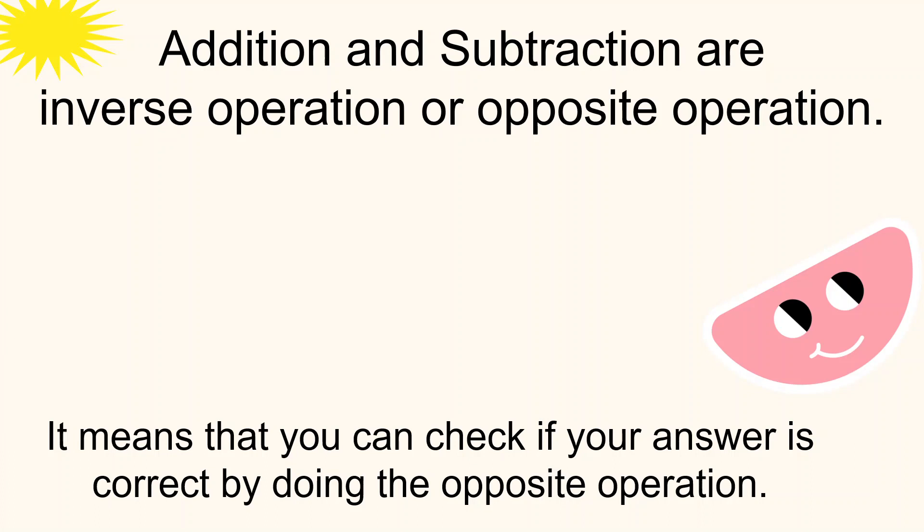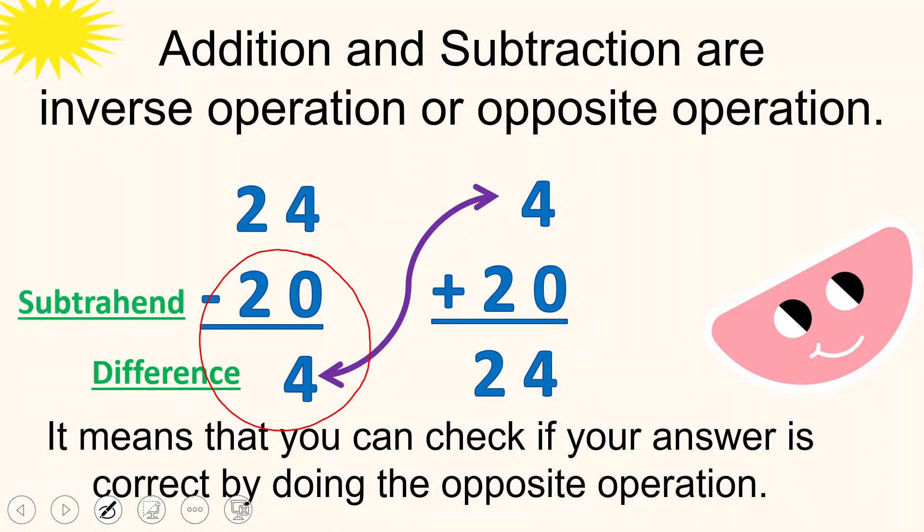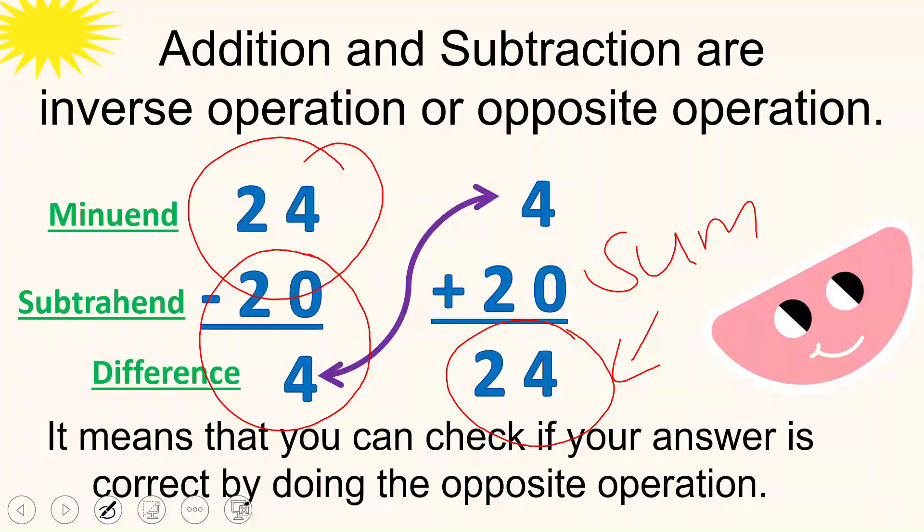They are opposite operation. We can use them for checking the answer if it's correct. Let's go back to the solution to the problem of the day. We have 24 minus 20 is equal to 4. So let's check by using the opposite operation, which is addition. We will add 4 and then 20. 4 is the difference and 20 is the subtrahend. And then 24 is the minuend. As you can see, the minuend and the sum here are the same. That means your answer is correct.